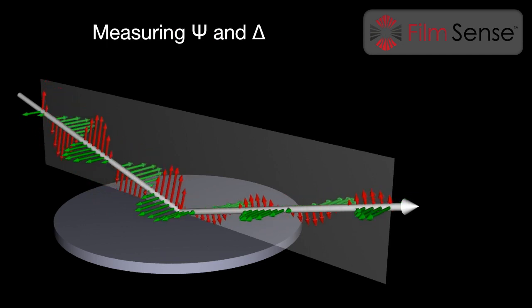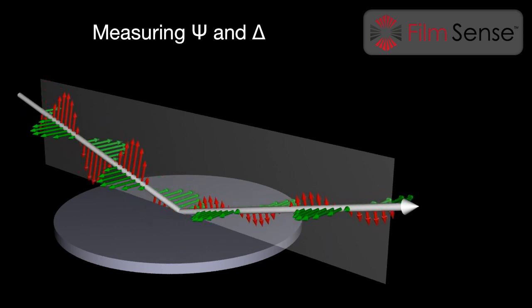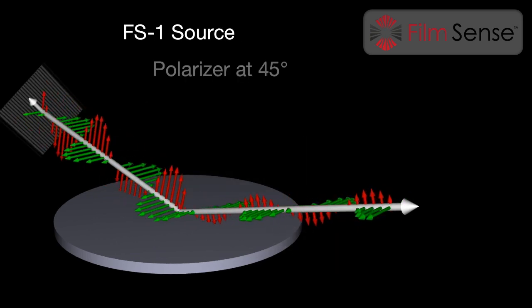To measure the ellipsometric parameters, an ellipsometer system must set the polarization state of the incident beam and detect the polarization state of the reflected beam. In the FilmSense FS1 ellipsometer, a polarizer in the source unit sets the incident beam to a linear polarization state, rotated 45 degrees from the plane of incidence.